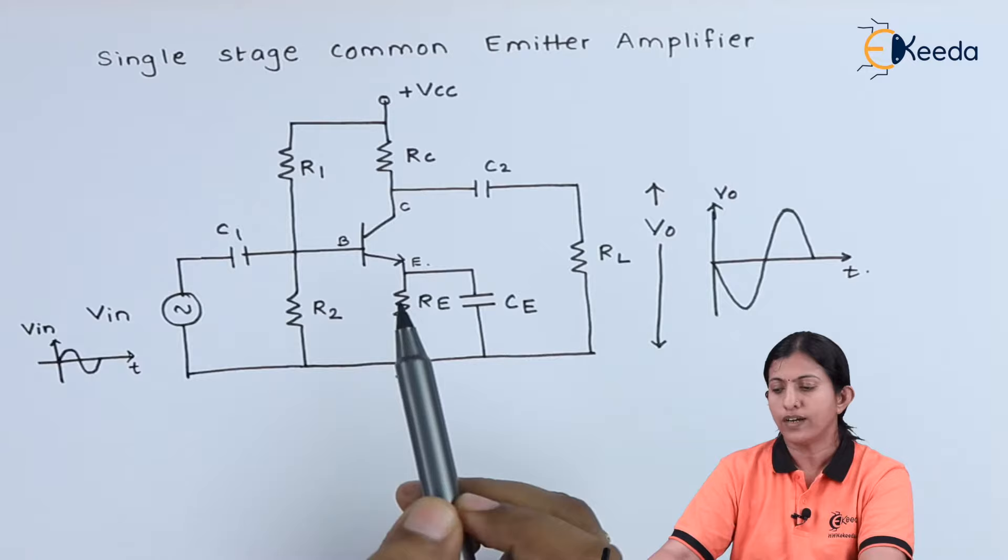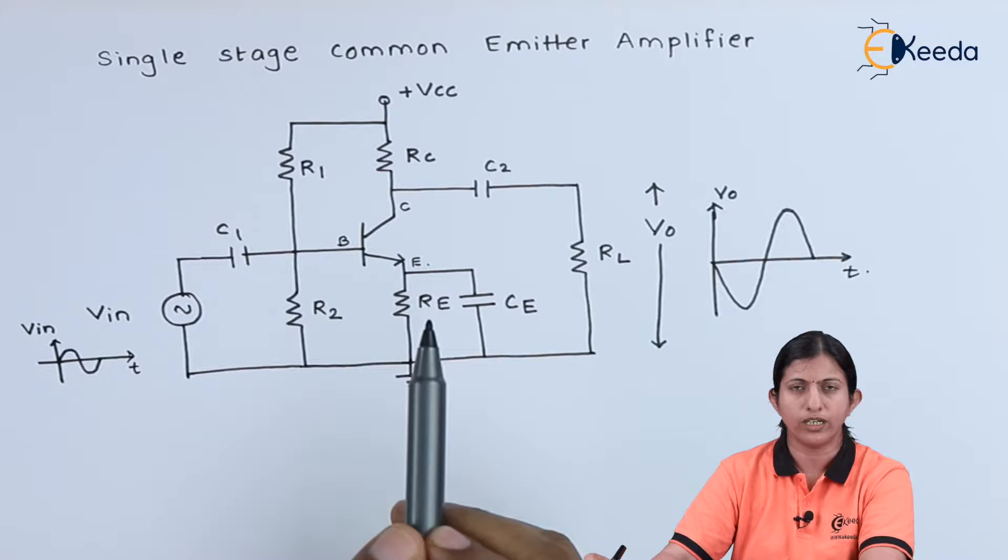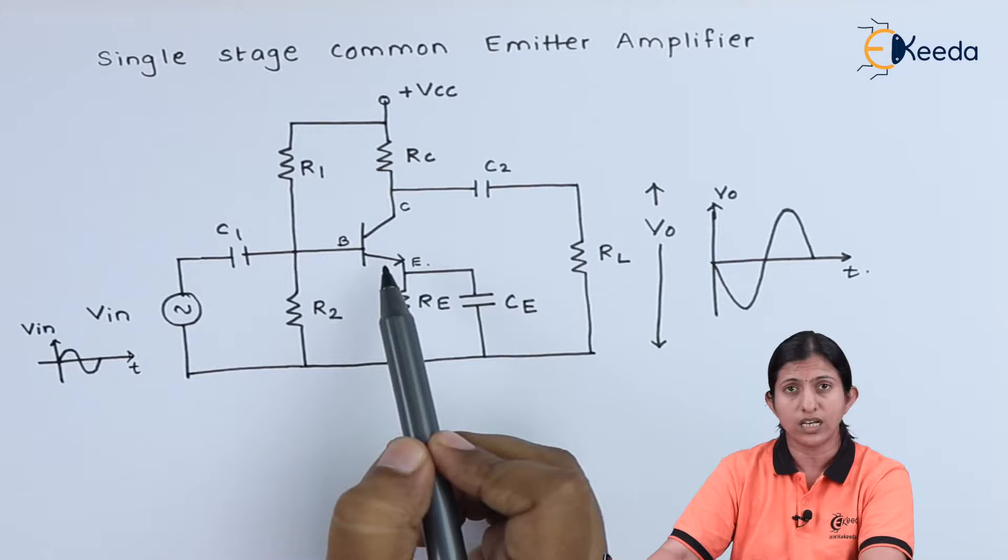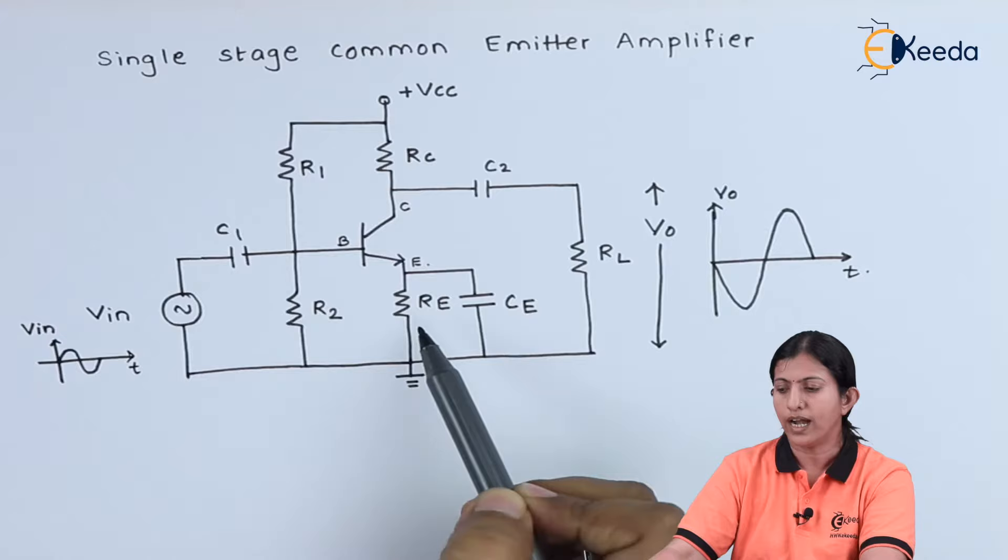To this transistor, we apply voltage divider biasing. Voltage divider biasing is necessary to keep the Q point or operating point exactly at the center of the load line so that we can use this transistor for amplification purpose.